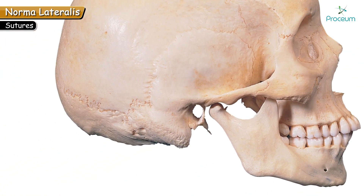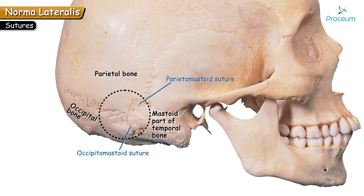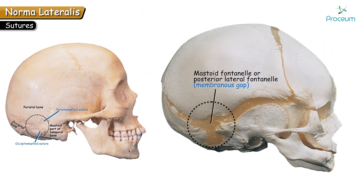The next feature is the Asterion, present on the posterior lateral side. It is the meeting point of three bones — parietal, occipital, and mastoid part of the temporal bone — where the parietomastoid and occipitomastoid sutures meet. In fetal life, it is present as a membranous gap termed the mastoid fontanel or posterior lateral fontanel, and this gap also closes usually two to three months after birth.